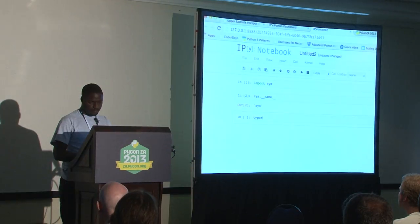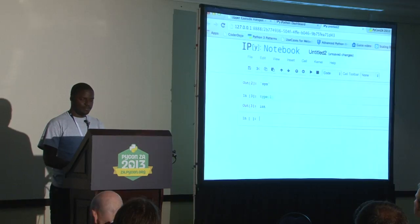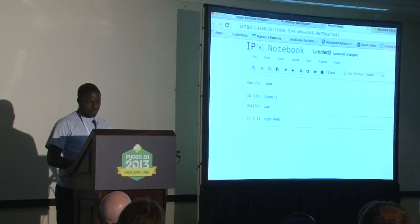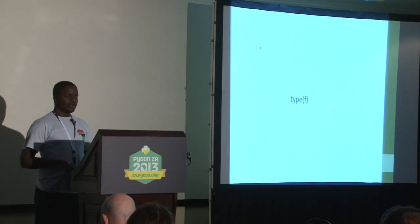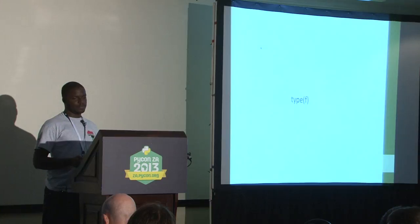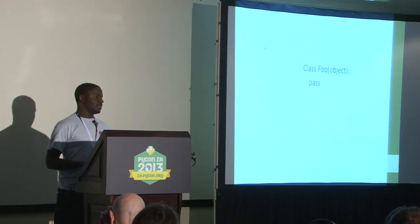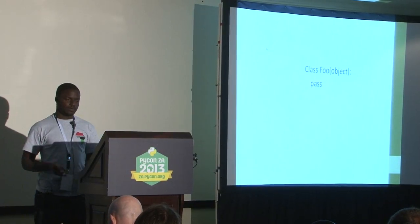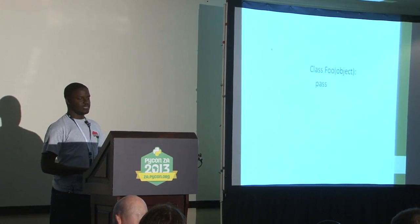If I call type on 1, it tells me type of 1 is an int. I call type on sys, it tells me sys is a module. So let's talk about how we create new types in Python. Basically, we would have to write a class that describes whatever type we want to create. This is how we would do it in Python 3, and this is Python 2 syntax — Python 2 classes have to explicitly inherit from object.